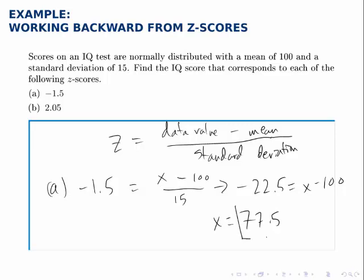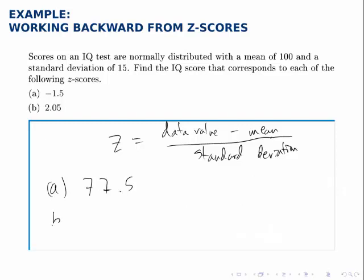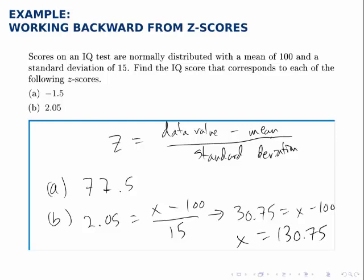So a z-score of negative 1.5 corresponds to an IQ score of 77.5. For part b we do the same process: the z-score equals the data value minus the mean divided by the standard deviation. So we multiply both sides by 15 and find that 30.75 equals x minus 100. And then adding 100 to both sides, x equals 130.75. So a z-score of 2.05, or just over two standard deviations above the mean, corresponds to an IQ score of around 130.